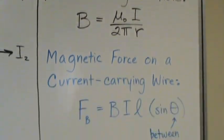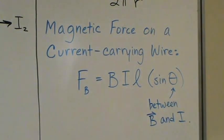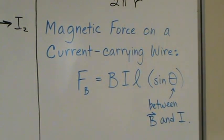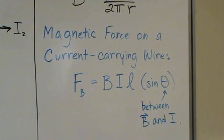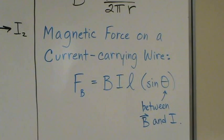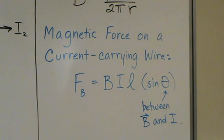We've also learned that a magnetic force on a current carrying wire will occur when the wire is in a magnetic field. We find that force by multiplying the strength of the magnetic field B times the current in the wire times the length of the wire times the sine of the angle between the magnetic field vector and the current direction.